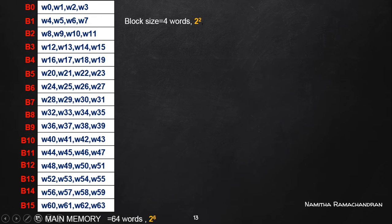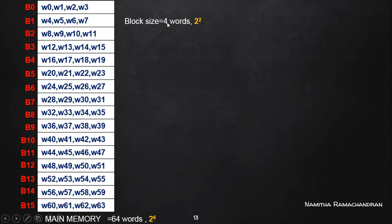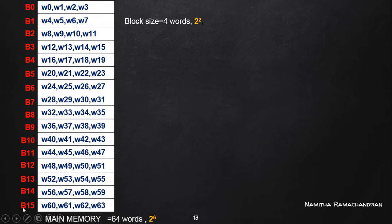So how many such memory blocks are possible in this particular memory system? The main memory has a total of 64 different words, and we form memory blocks with size equal to 4. So the number of blocks equals 64 divided by 4, which gives us a total of 16 different blocks, each with 4 different words.